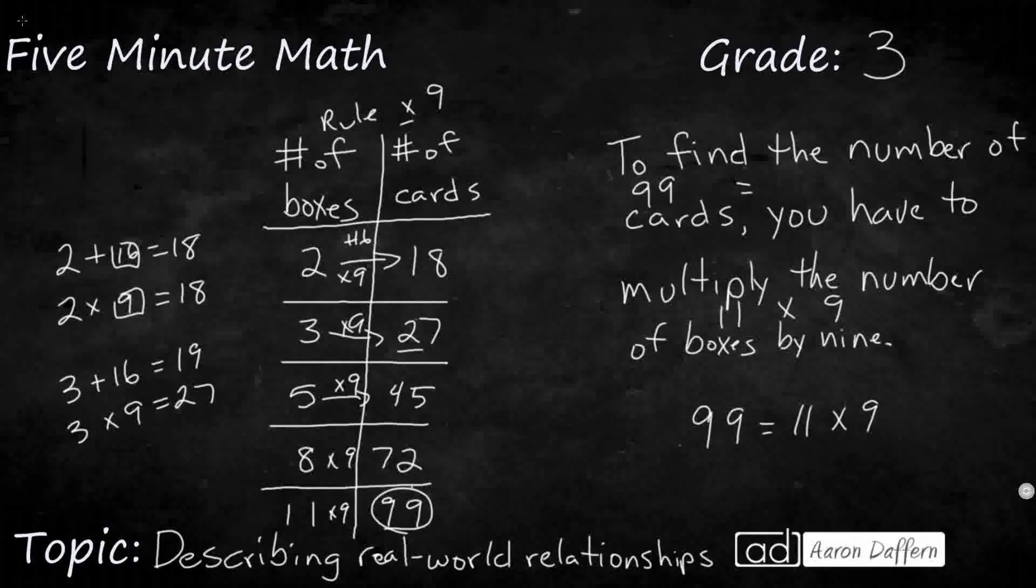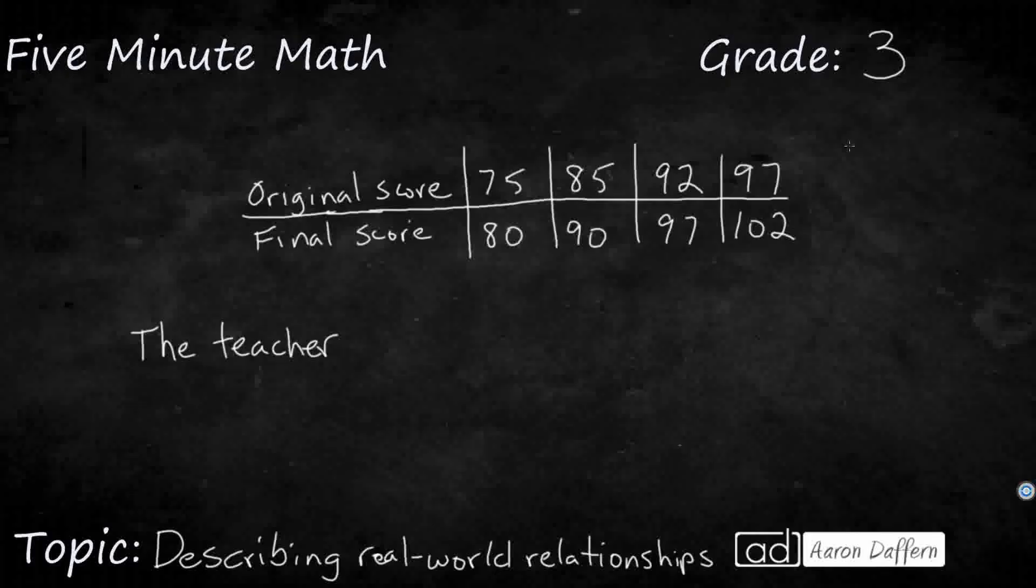Let's look at another example. So we have another table here, and we have a teacher is giving some extra credit to her students, and we need to figure out how we can describe the amount of extra credit that the teacher is giving to the students. And so we have a table here, and this one is going to end up going side to side. We see we have an original score of a student scored 75, the final score was 80, 85 to 90, 92 to 97, 97 to 102.